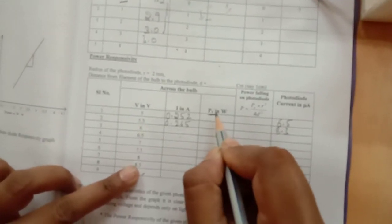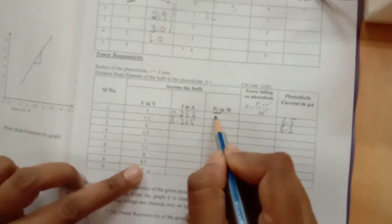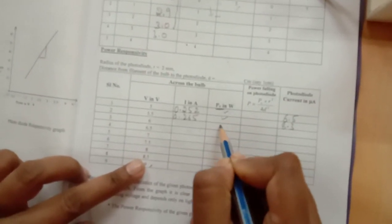I am going to fill over here in the last column of the table. This you repeat till 9 volts. You get so many values. Then all these data you use in order to calculate firstly the power across the bulb. Your P_naught is V into I. P is equal to V into I.